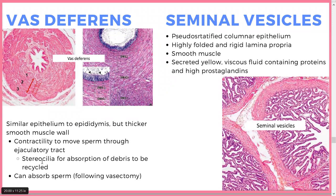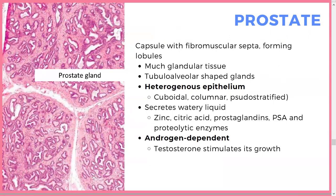The stereocilia in the vas deferens absorb debris — they're environment-friendly recyclers. After a vasectomy, that's where sperm is absorbed. The prostate can be recognized by its domes on histology and is mostly glandular tissue. It's heterogeneous rather than having a specific epithelium, which helps recognition. It secretes a watery liquid of zinc, citric acid, prostaglandins, PSA — used as a prostate cancer screening marker — and proteolytic enzymes. Testosterone stimulates its growth, causing age-related hyperplasia.